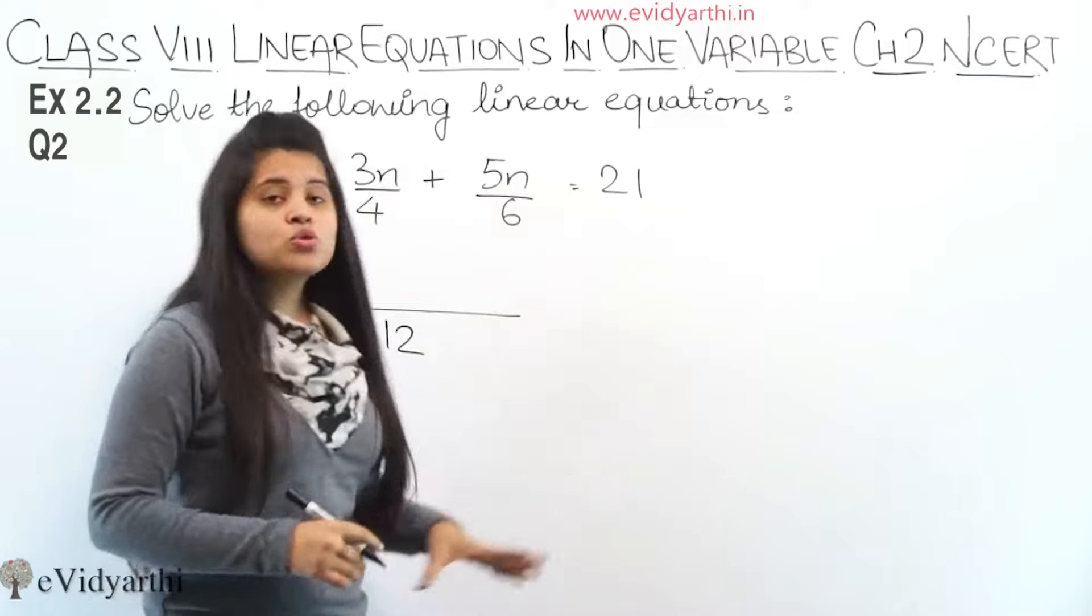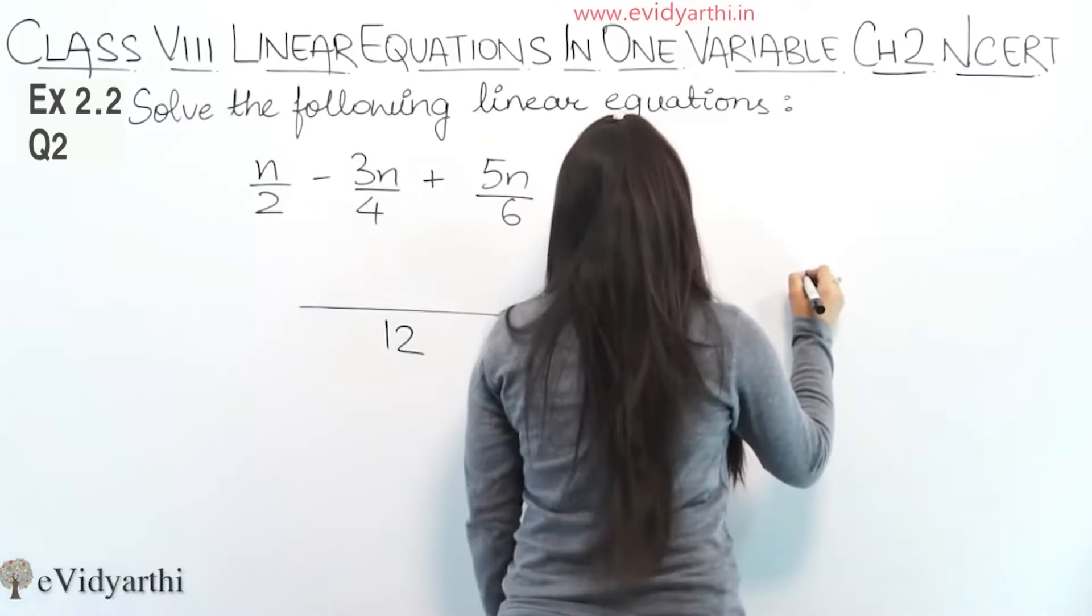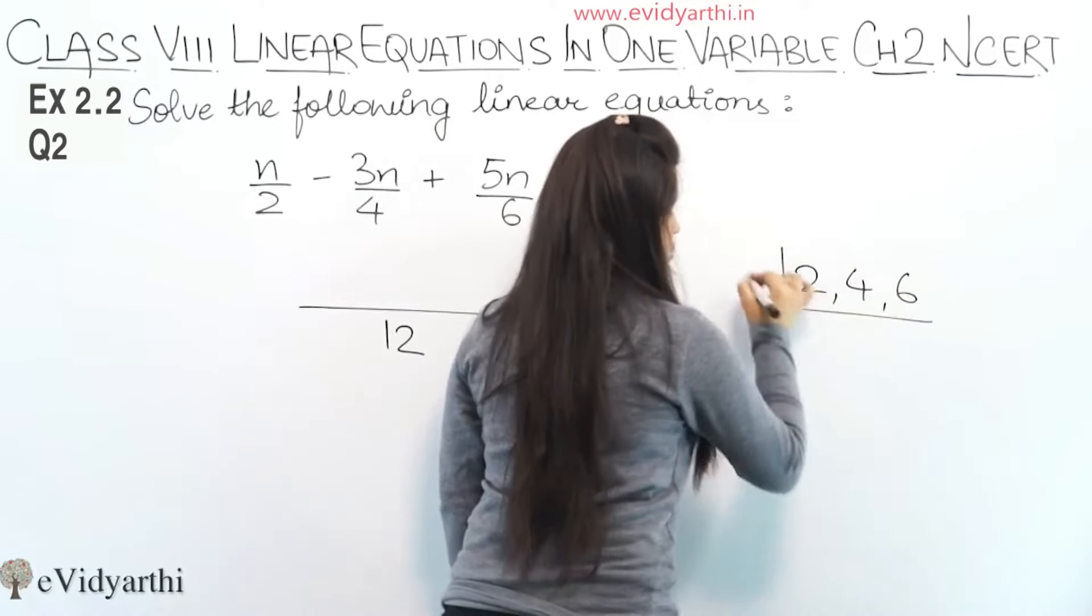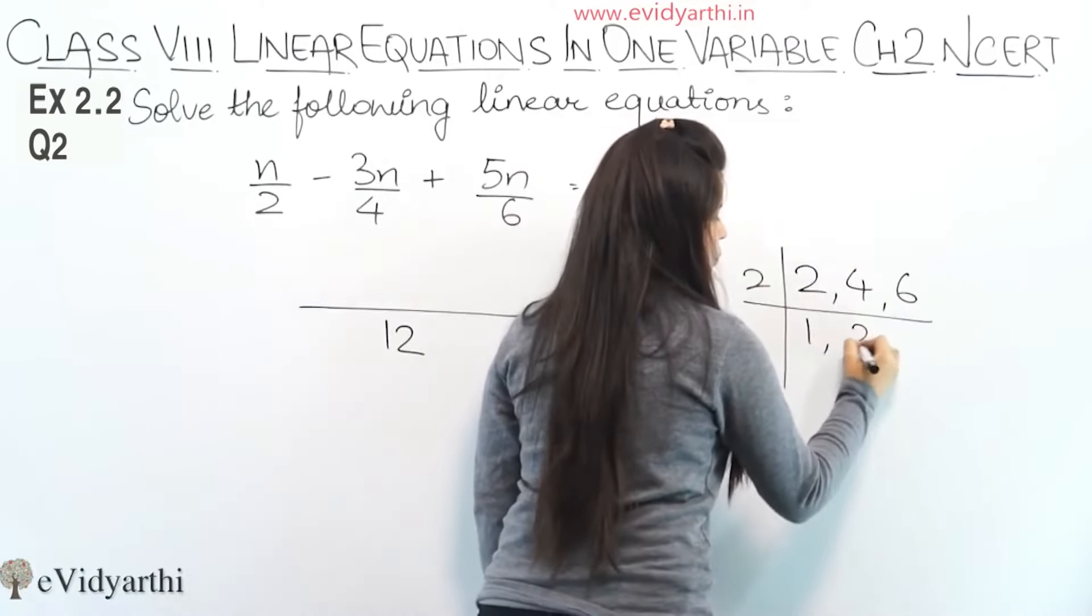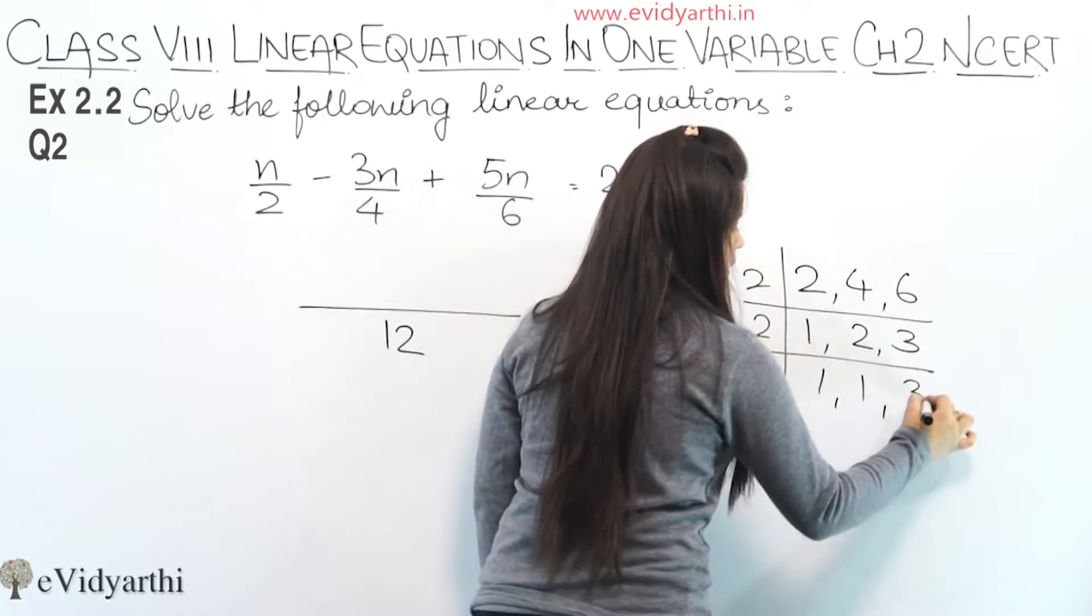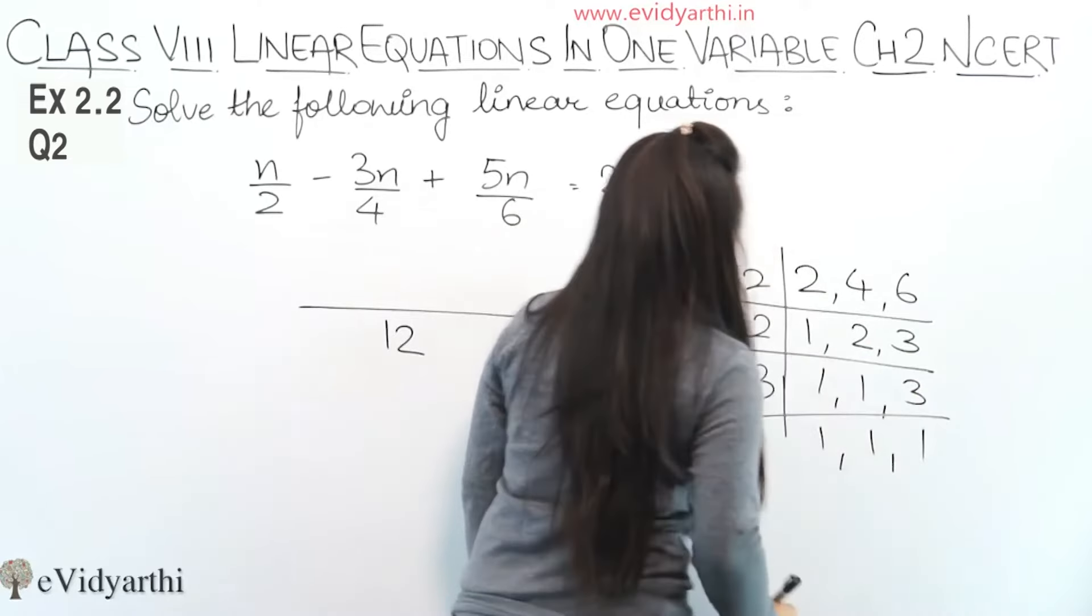But if you have a problem, you have to solve the LCM. So this will be 2, 1, 2, 3. Again with 2 we will get 1, 1, 3. Again now with 3 we will get 1, 1 and 1.